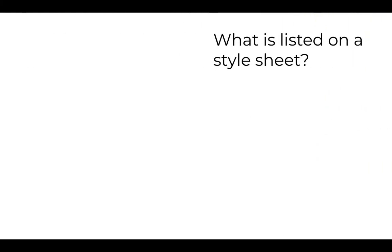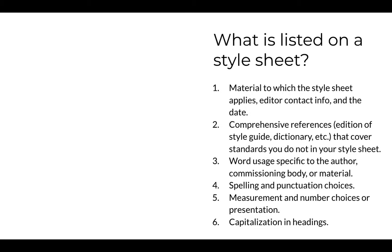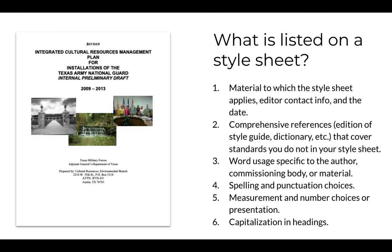In that earlier lecture, I presented six typical types of information included in a style sheet, and I've provided several sample style sheets on Canvas with the comprehensive edit assignment. But I want to briefly lead you through the editor's choices in another style sheet in this video. We're going to consider a style sheet for editing the standard operating procedures that are part of the Integrated Cultural Resources Management Plan, or ICRMP. You used some of that material in the Editing with Word tutorial during Module 6. So let's see what a group of student editors chose to put into their style sheet for copy editing this material.